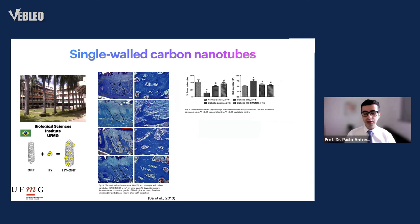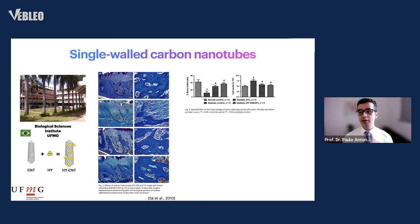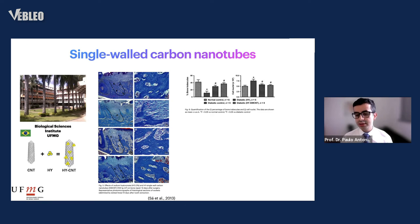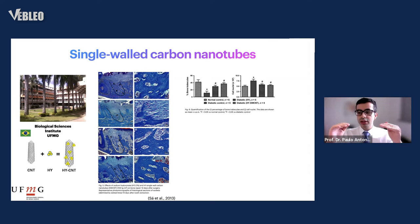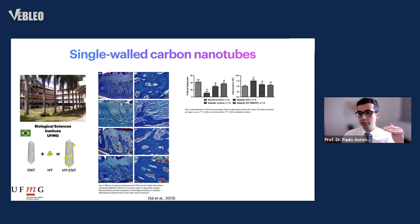In 2013, our group conducted a study with diabetic rats, because we know that diabetes has a great negative implication in bone tissue repair. In this study, our group demonstrated that the application of single-walled carbon nanotubes functionalized with hyaluronic acid was capable of almost eliminating the detrimental effects of diabetes on bone repair — because the percentage of bone trabecular area after 14 days after surgery was almost similar between the diabetic rats treated with carbon nanotubes functionalized with hyaluronic acid compared to normal control rats without diabetes.